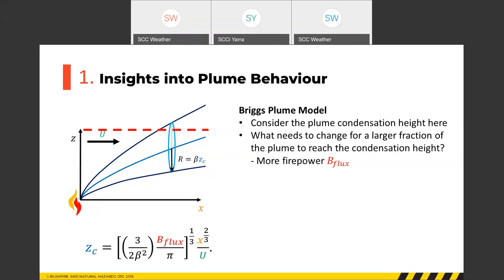To increase the height the plume reaches, we need to increase fire power — that's in the numerator of the equation — or reduce background wind, which is in the denominator. This is fairly obvious: a hotter plume or a reduced wind speed leads to a taller plume. The next step is to quantify this relationship.